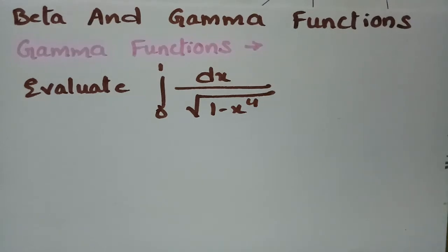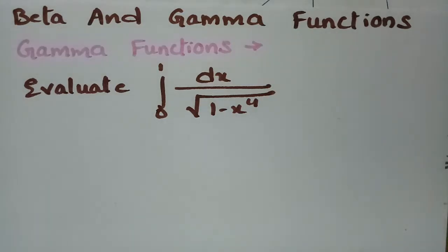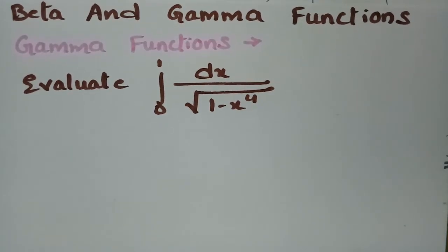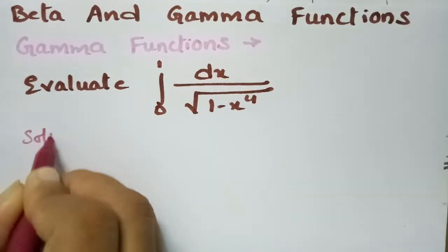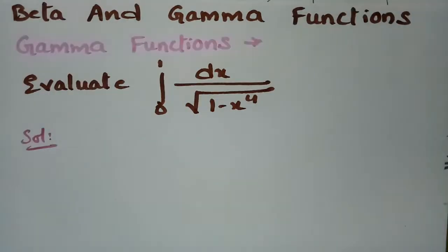In today's video we are going to evaluate the integral from 0 to 1 of dx divided by the square root of 1 minus x to the power 4. This topic is from Beta and Gamma functions. We will use the properties of Beta as well as Gamma functions in order to solve this, and we have a substitution here.